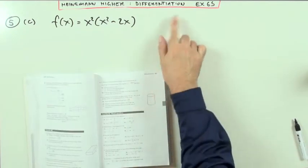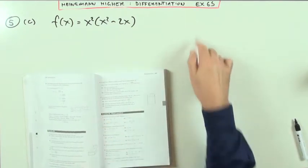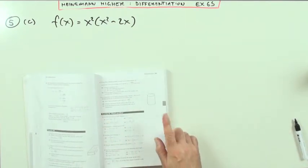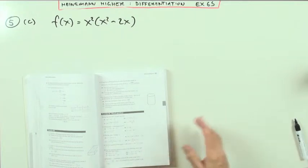Heinemann Higher, chapter 6, differentiation, mixed exercise at the end, success, still question 5, but part C and D this time, otherwise it'd be too long.